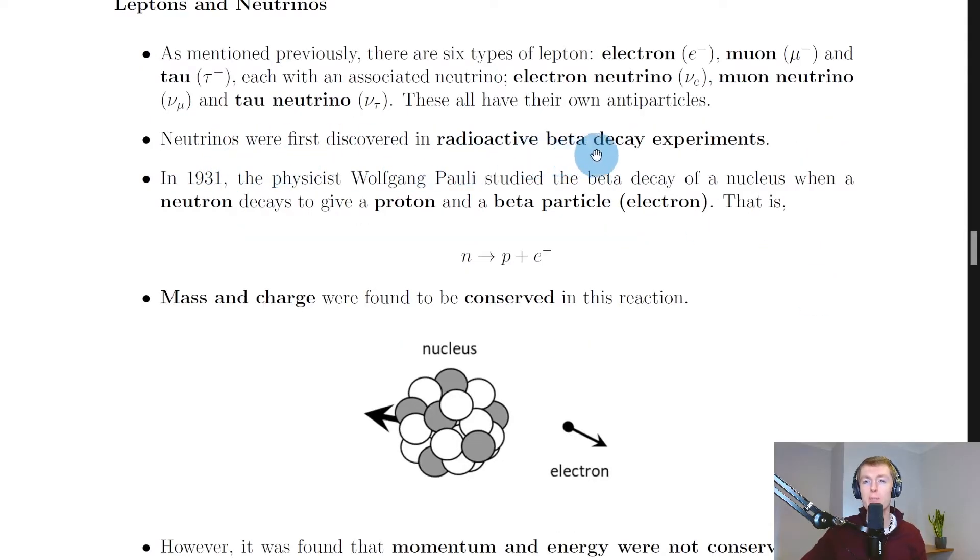I'm going to take you through the story of how neutrinos were discovered. In 1931, the physicist Wolfgang Pauli studied the beta decay of a nucleus when a neutron decays to give a proton and a beta particle, i.e. an electron.